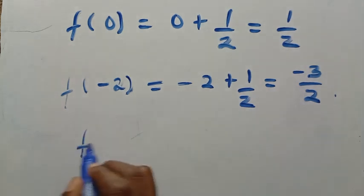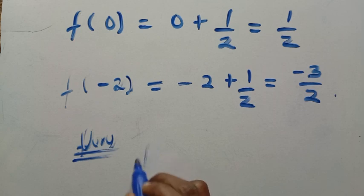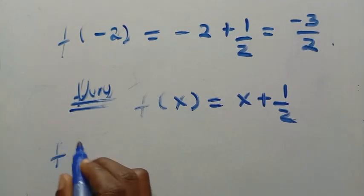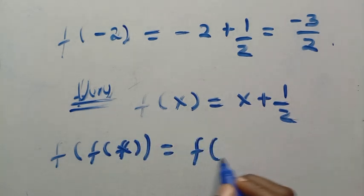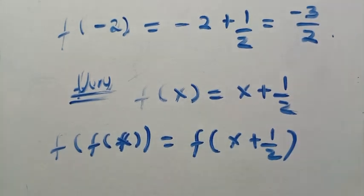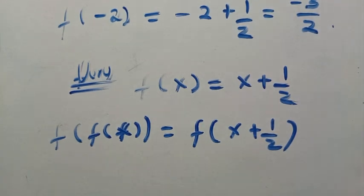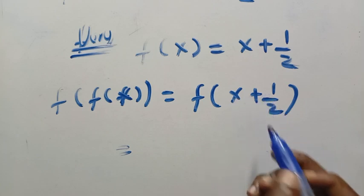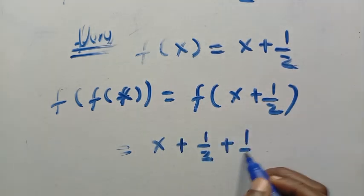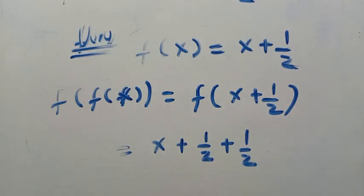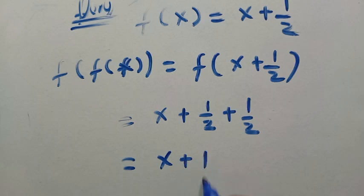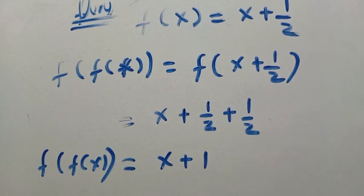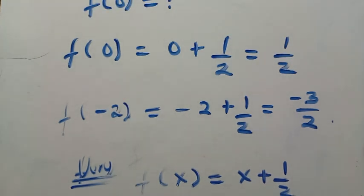To verify, since f of x equals x plus one half, applying f to both sides gives f of f of x equals f of x plus one half. Replacing every x with x plus one half in the formula gives x plus one half plus one half, which equals x plus one. So f of f of x equals x plus one, confirming the left-hand side and right-hand side are equal. Thanks for watching, see you in the next video, bye bye.